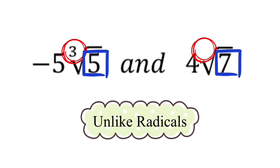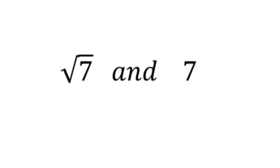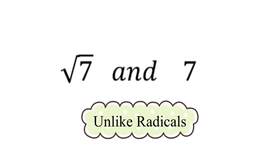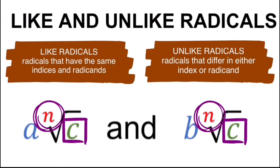In the next example, both values are 7, but one is a whole number while the other has a square root. So we can say these two are unlike radicals. That is how we determine whether two radical expressions are like radicals or unlike radicals.